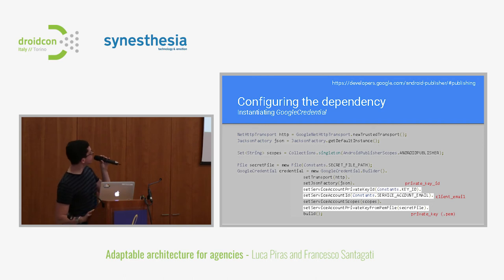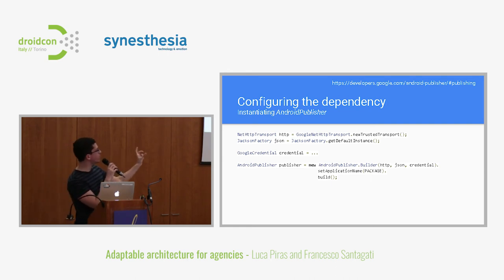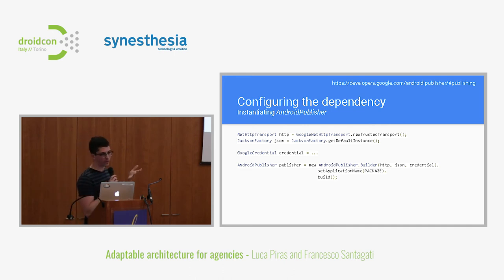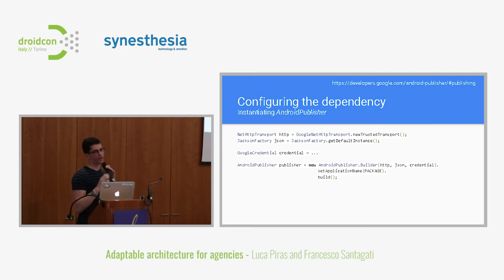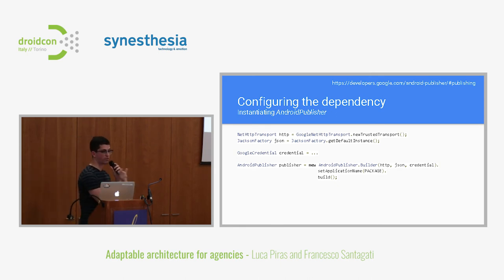The important parts of the credential are those three fields we got from the key previously: the service account email and the keys to authenticate your robot to talk to the Google Play Developer Console. Once you have the credential, you can instantiate the publisher by passing in the required objects and setting the application name — which is the identifier of your app on Google Play, like com.soundcloud.android, or your own package. This could be dynamic, so if you want to update multiple applications at once, you just change this package value.